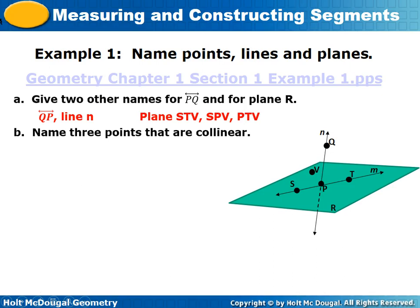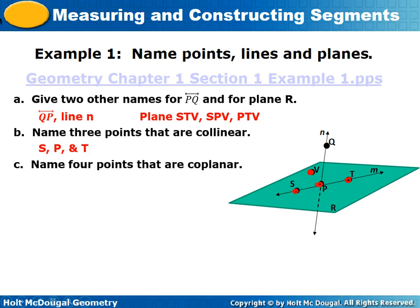Name four coplanar points — four points on that plane. We have three already marked as S, T, and D, and our fourth one would be B. Those are the four points on that piece of paper, which represents the plane.